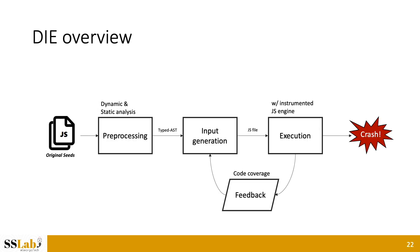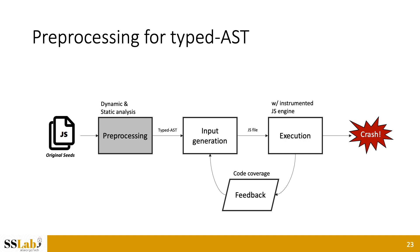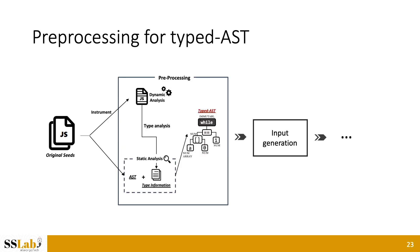We propose DAI, a fuzzing framework with a strong generation engine and mutation engine that preserves aspects of existing bugs. In the big picture, DAI consists of three parts: preprocessor, input generator, and executor. The first component is the preprocessor, where original seeds are conveyed. It instruments the original seed to dynamically get the type of identifiers. With the type information generated by dynamic analysis, it produces a typed AST with type information for every node, which is then passed forward for input generation.